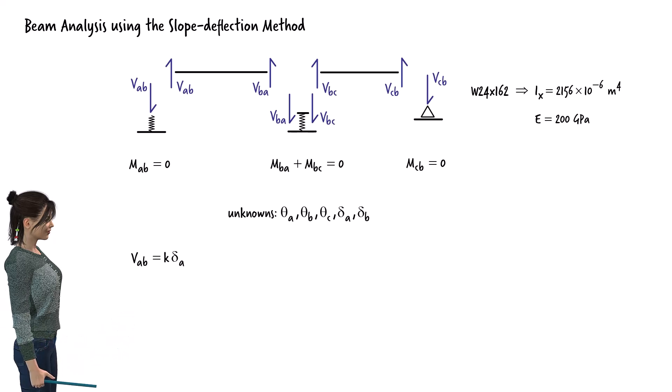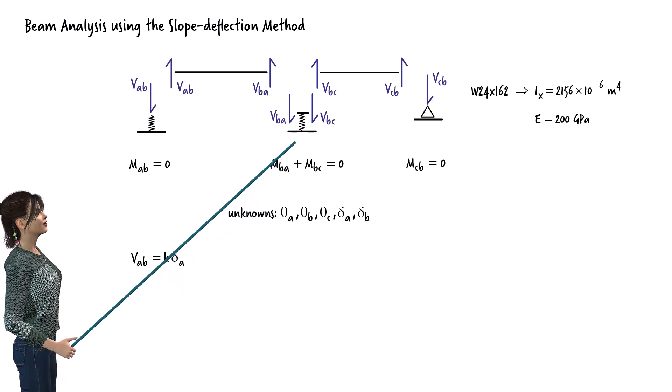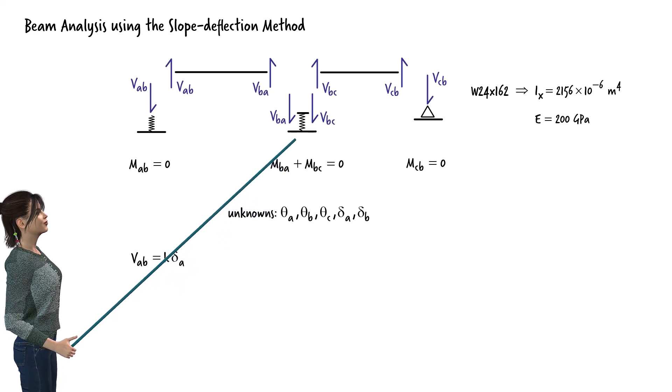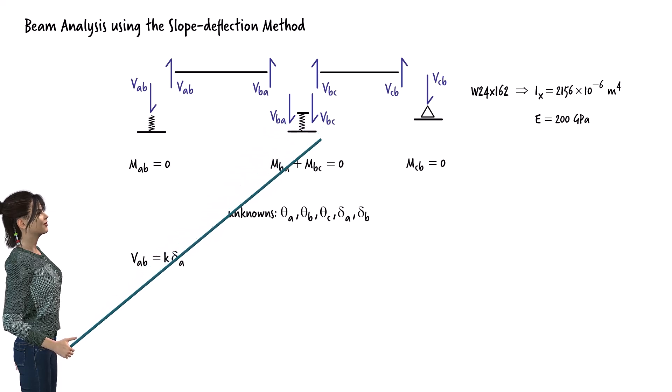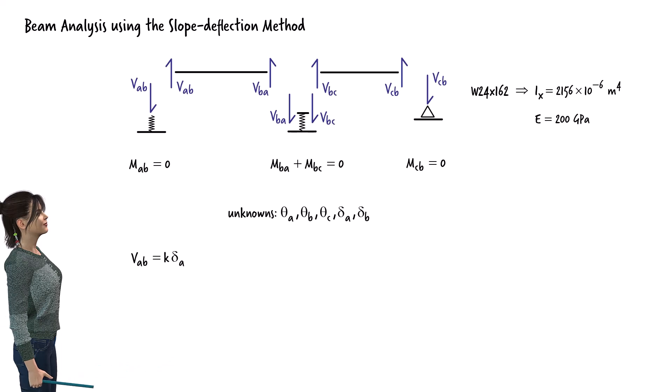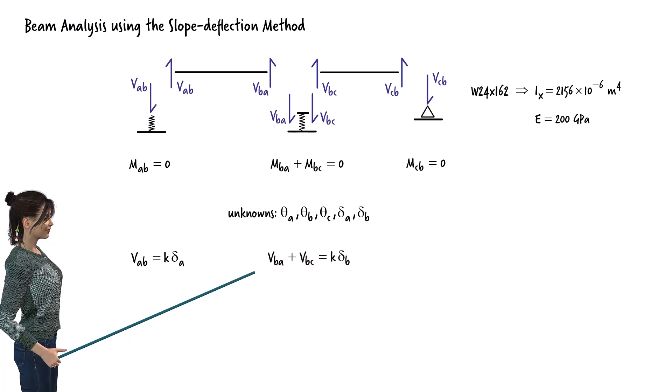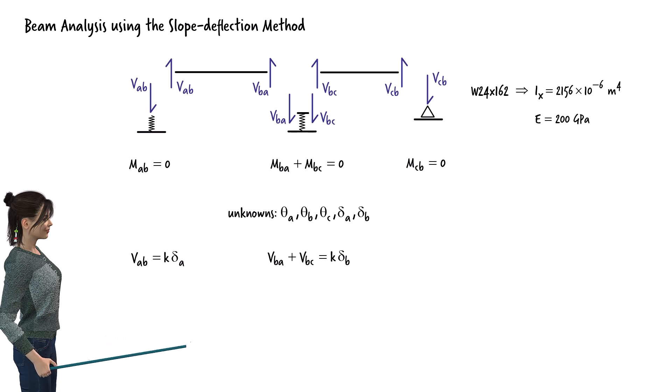To establish the fifth equation, we enforce the equilibrium of the shear forces at joint B. Two shear forces act at joint B, VBA and VBC. The sum of these two forces represents the axial force in the spring. Therefore, we can write VBA plus VBC equals K times delta B. Now we have our five equilibrium equations.